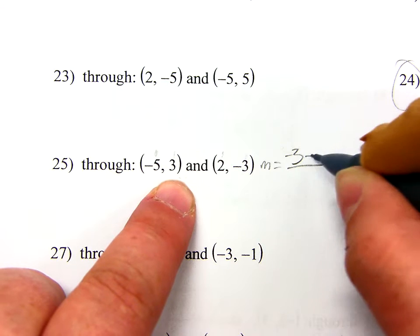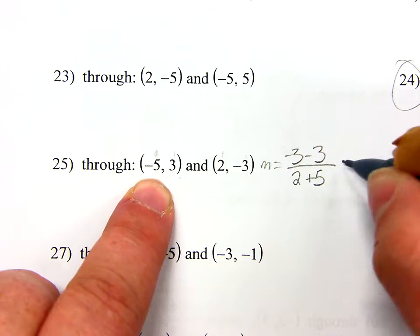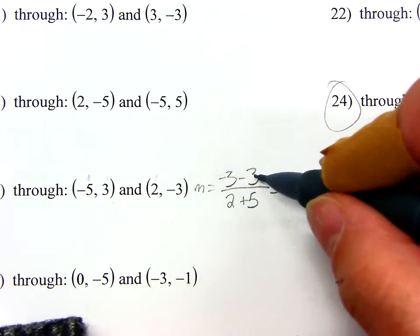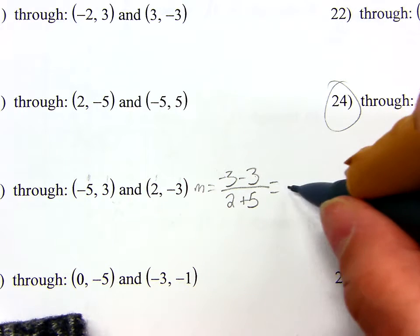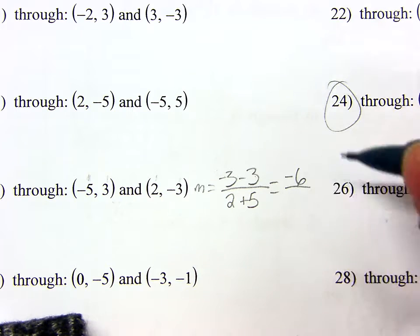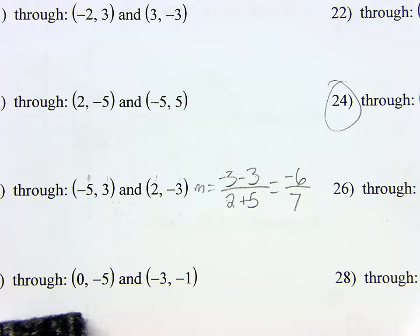Y2 minus Y1 over X2 minus negative 5 turns into a plus. Be careful and watch your signs. Negative 3 minus 3 is not 0. What is it? Negative 6 over 7. That's my slope. It's negative 6 sevenths. Now, I have the slope. I have 2 points.